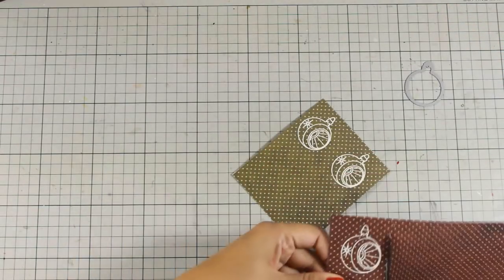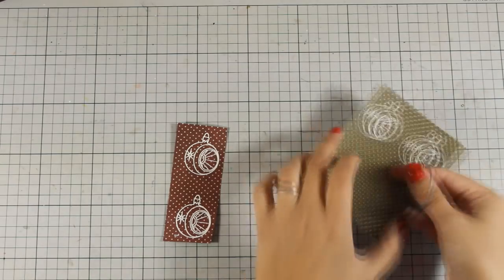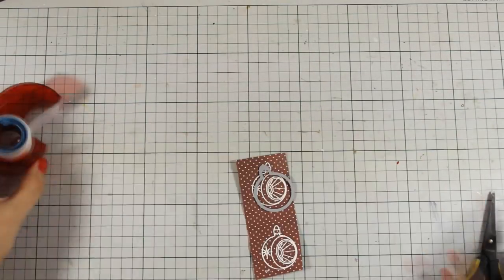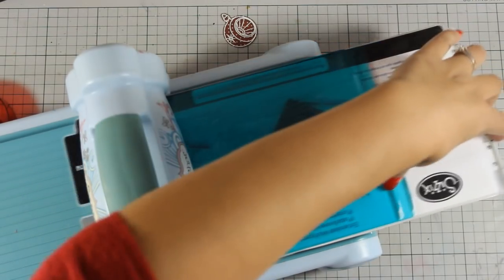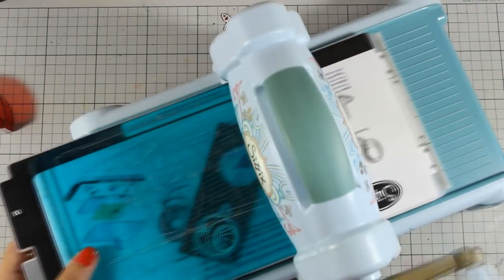So now I am going to use the die that was included in the set and I am going to cut the red ones. I am using my Sizzix machine and I had to pass it twice since there is only one die for the round ornament.